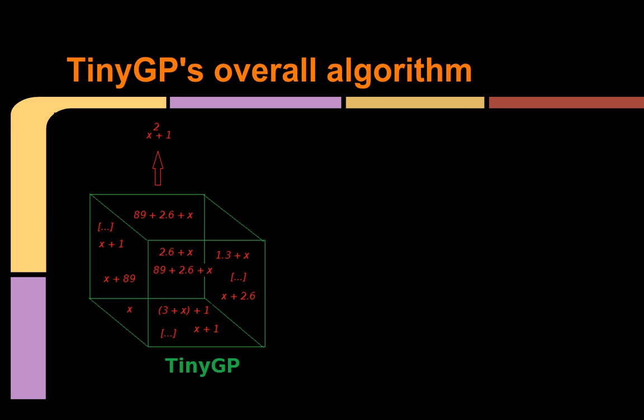TinyGP finds the right equation by evolving, literally, millions of equations. It takes equations, mates them together, and builds offspring equations, whose operations and constants are just slightly different from one another, and then tests every one of those equations to see how close each one is to the target values, when given the input values.